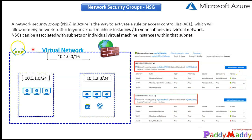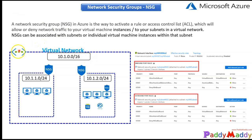Going back to what we learned about virtual networks in previous lectures: you have an address pool, within which you can have multiple subnets, and every subnet can hold different Azure resources. Now it's time to understand more about how Network Security Groups fit into this picture.